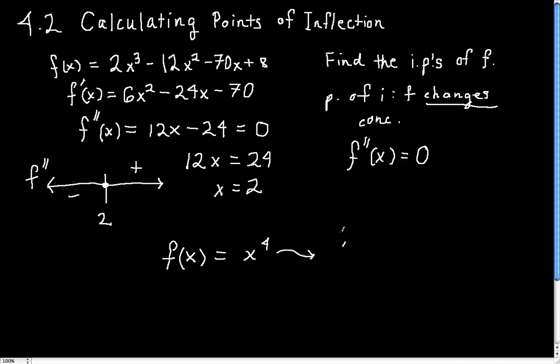If we differentiate twice, we get that f double prime of x is 12x squared. And so this equals zero where x equals zero.